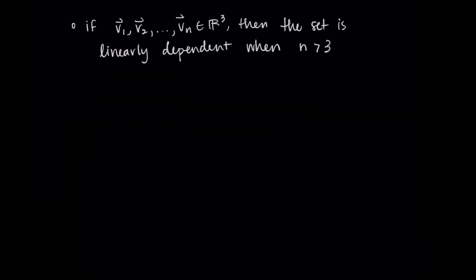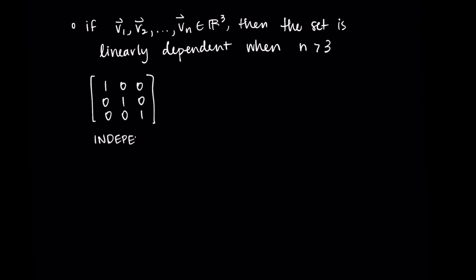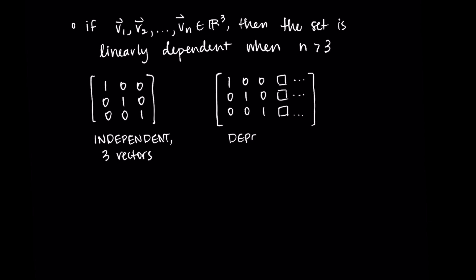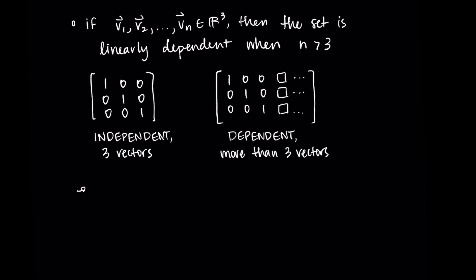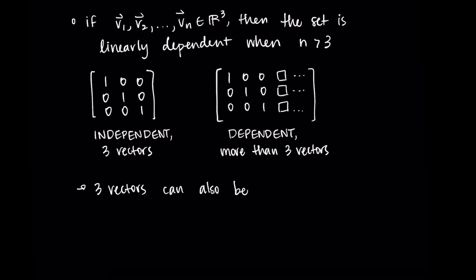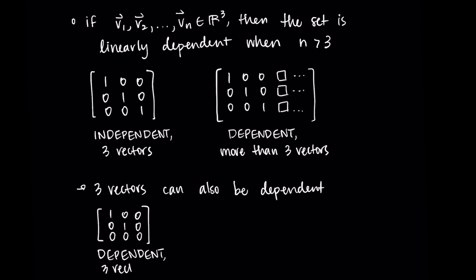Let's think about this again in R3. If we have a set of vectors in R3, meaning three rows in our matrix, then the set is linearly dependent any time we have more than three vectors. With only three vectors, we could be independent — ones on the diagonal with a pivot in each column. But as soon as we add a fourth vector, it corresponds to a free variable, so it's always a linearly dependent set. The same caveat applies: three vectors could be dependent, they don't have to be independent. But any time we have more than three vectors, we'll always have a linearly dependent set because there will always be free variables.